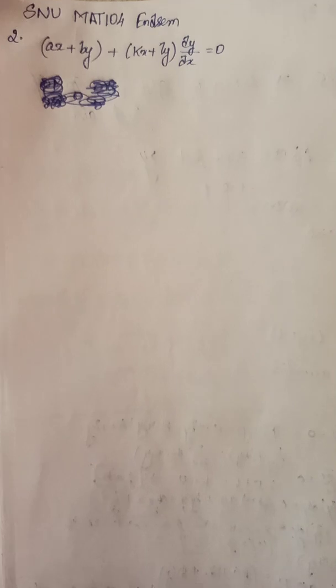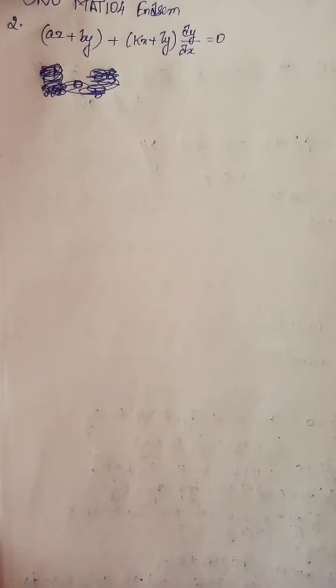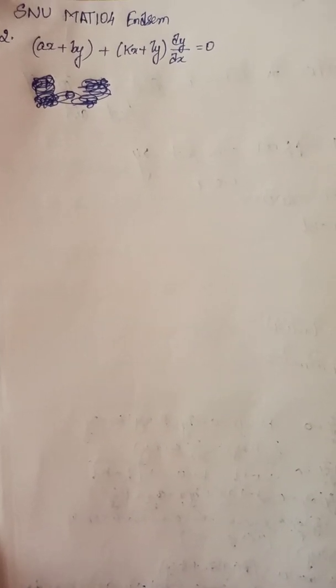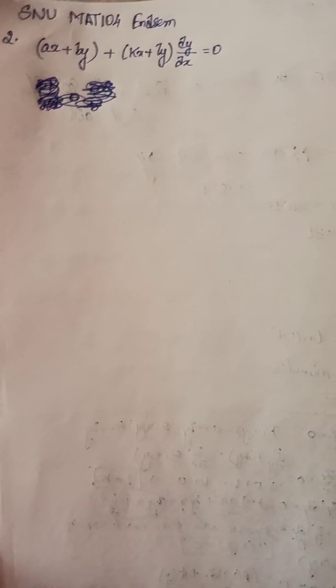Hi, this is Krishna. The question we have is an ordinary differential equation: (ax plus by plus kx plus ly) into dy by dx equals to zero. We have to find the condition for which this ODE becomes exact.